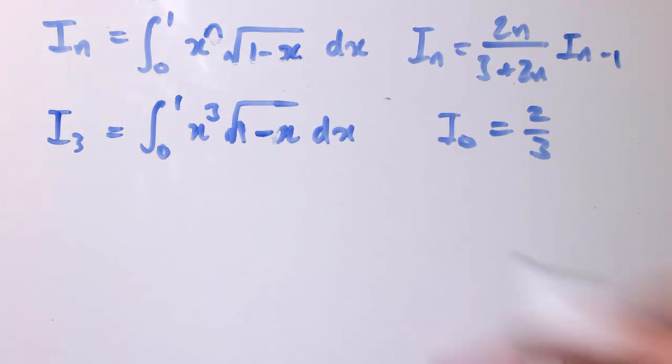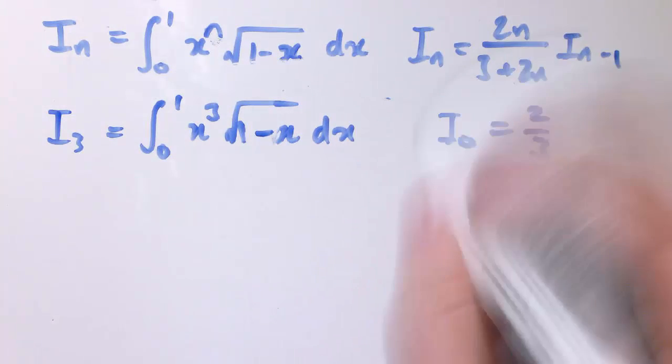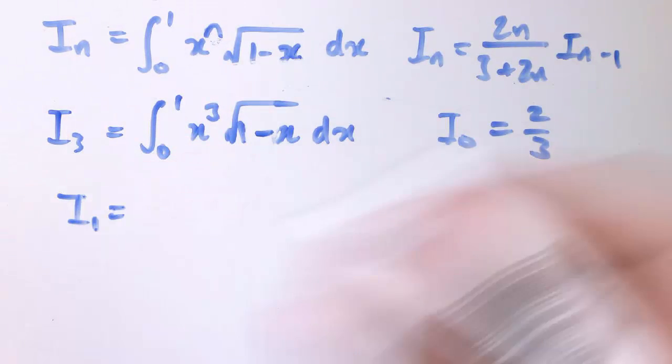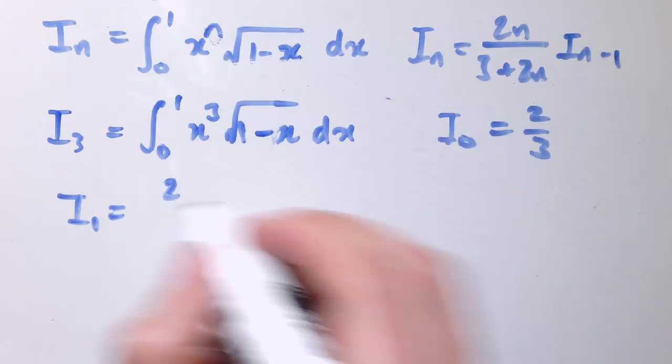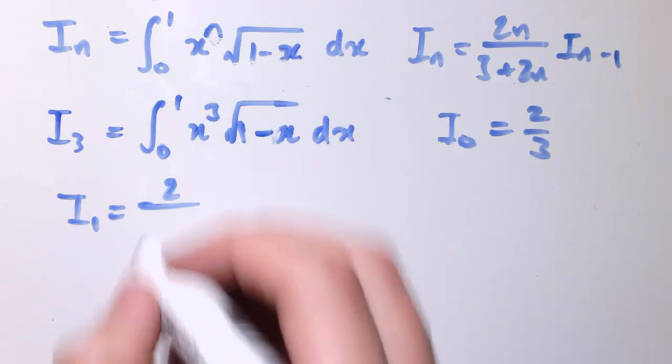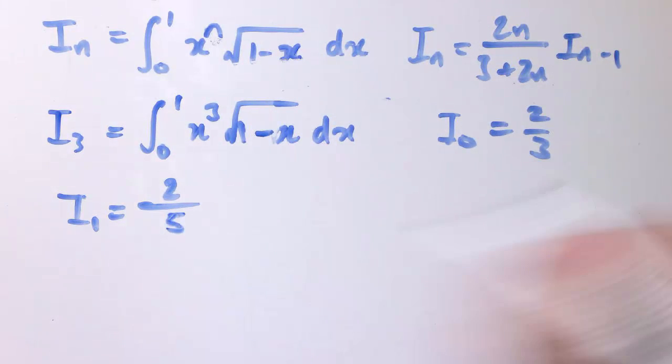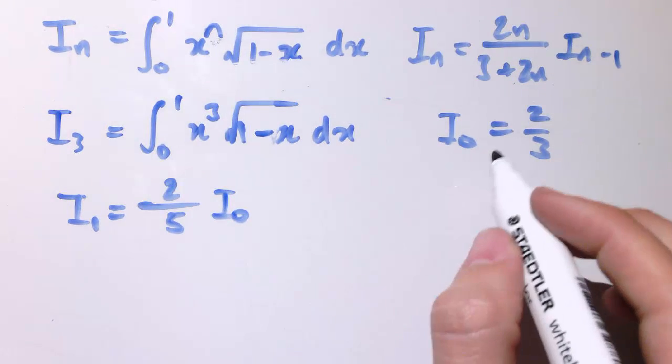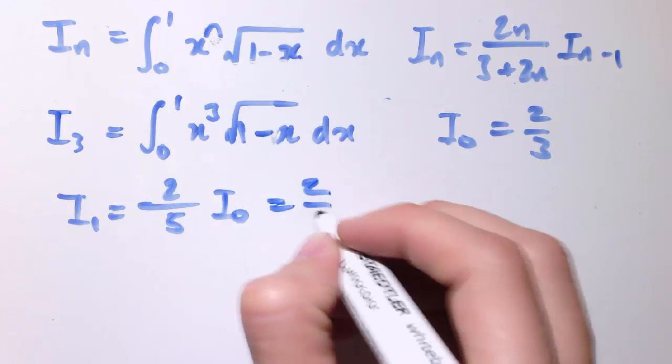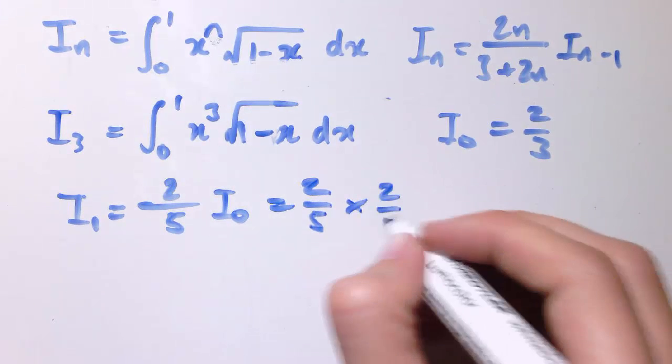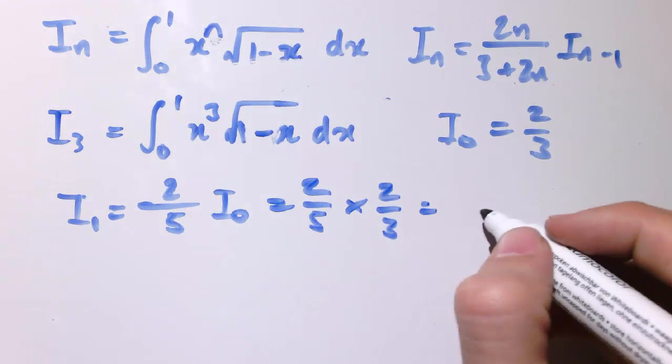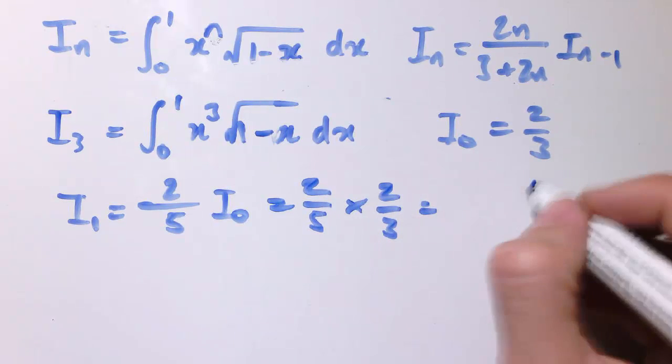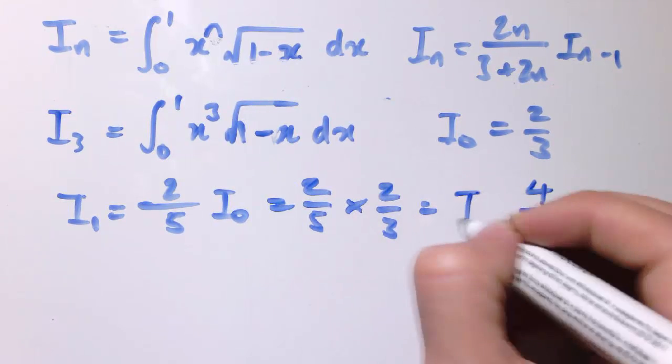And now to work out i3, I just have to use the reduction formula. So i1 is 2 times 1 over 3 plus 2 times 1. So 2 fifths times i n minus 1, which is i0. So that's 2 fifths times 2 thirds. So I've got 4 fifteenths. That's i1.